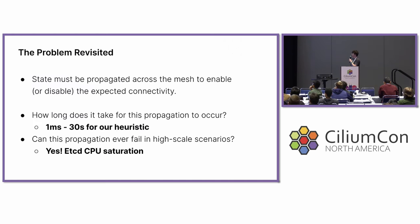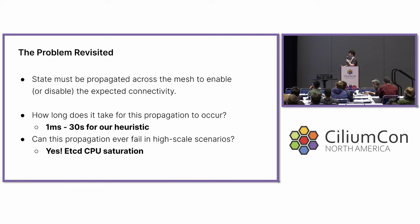Revisiting our problem questions: how long does it take for this propagation to occur? Again, calling this the propagation for Cluster Mesh API server isn't too accurate, but the range was one millisecond to 30 seconds — and the key thing to take away is that this range is pretty high. And yes, this propagation can fail if etcd becomes critically impacted.